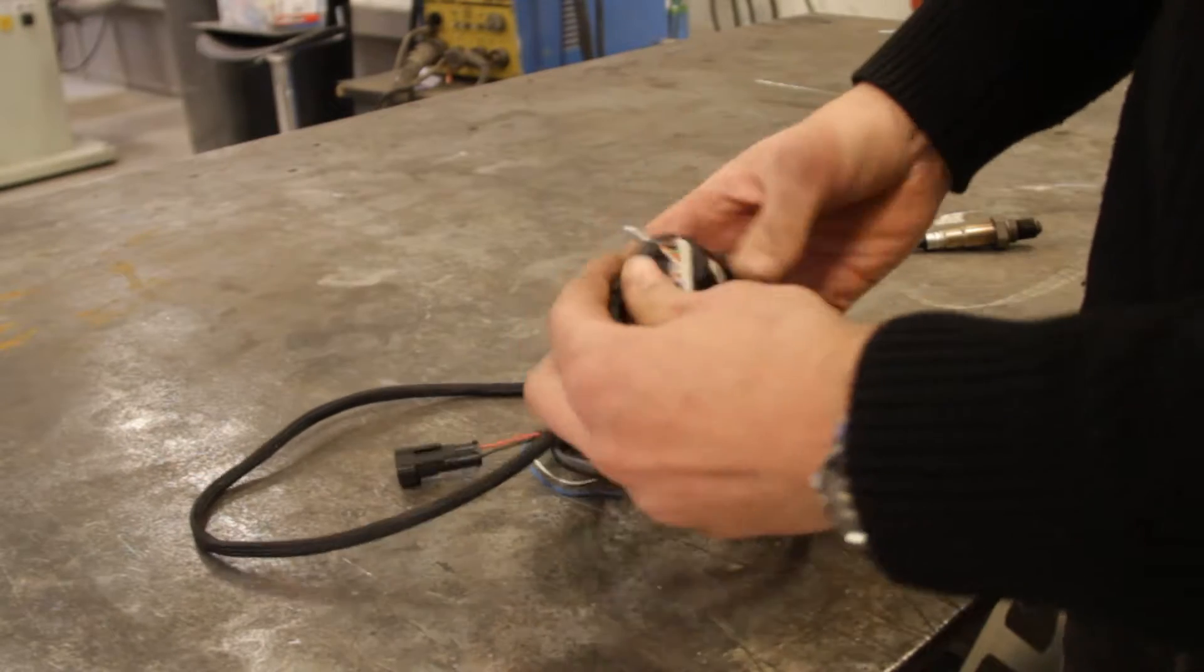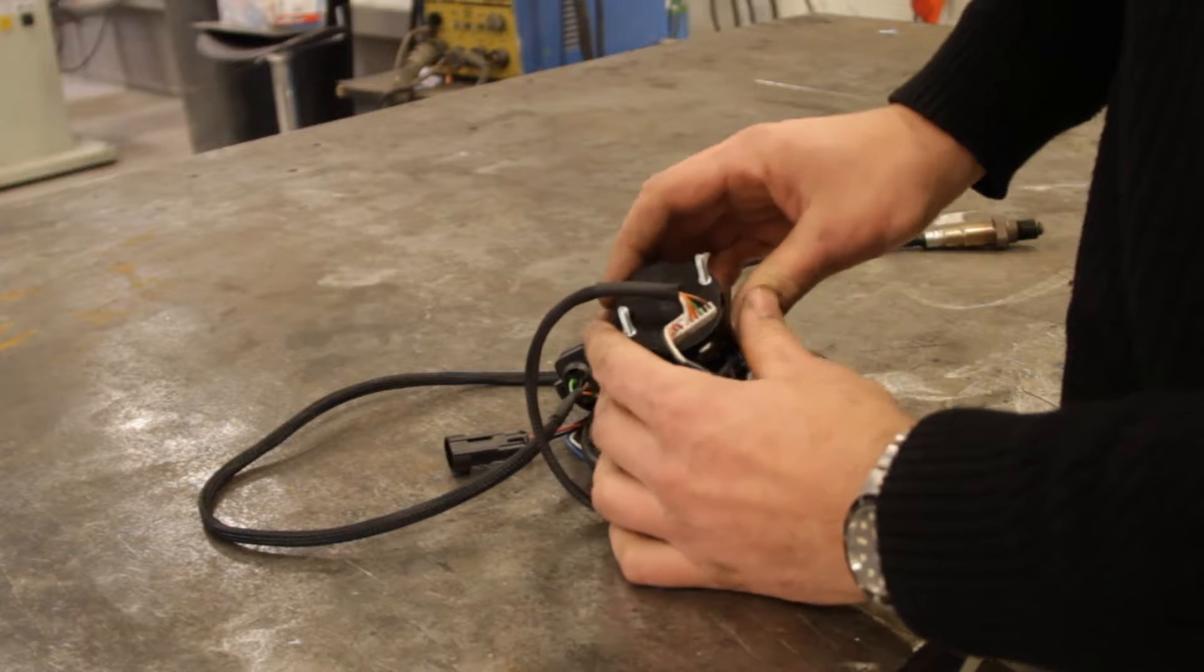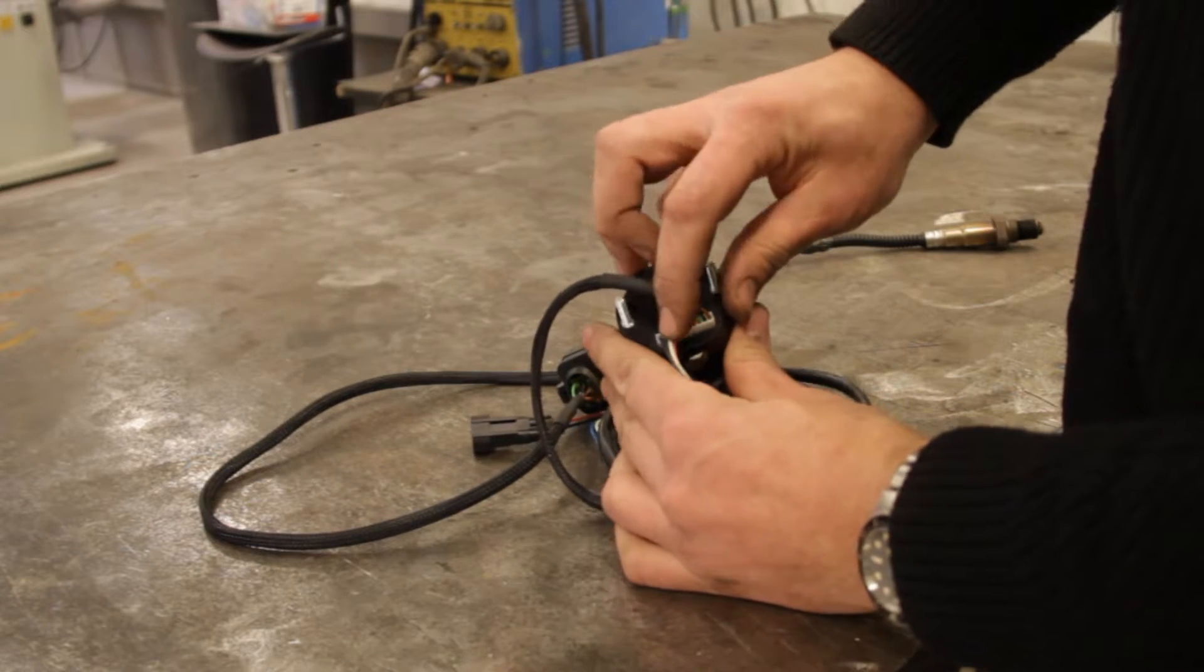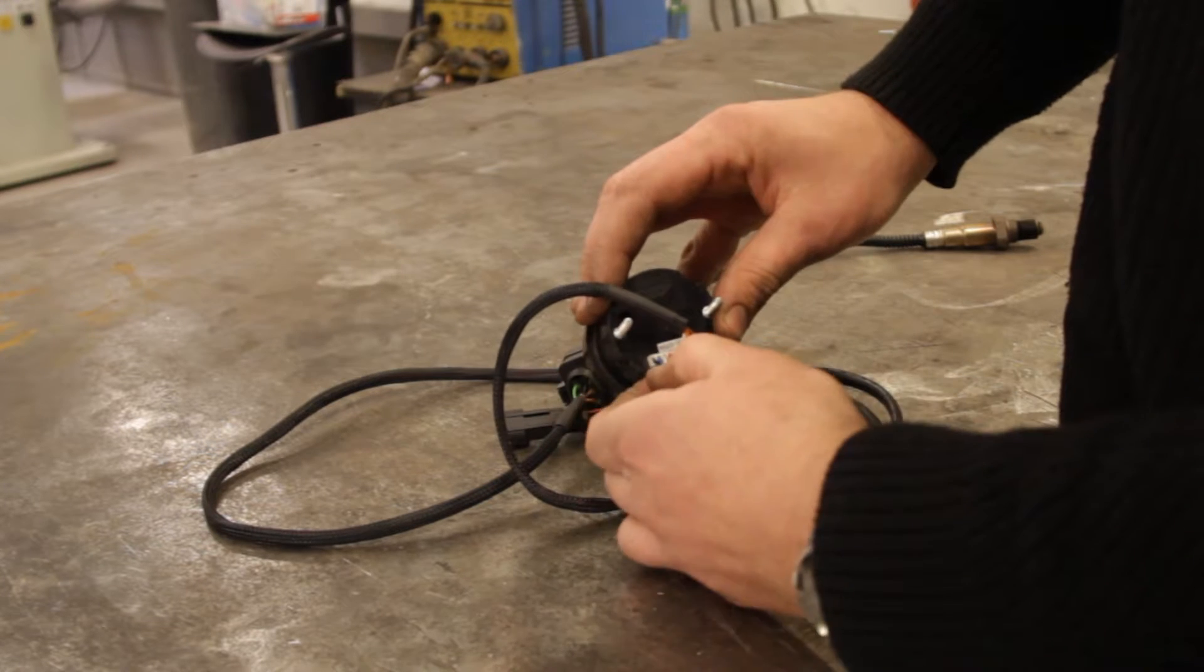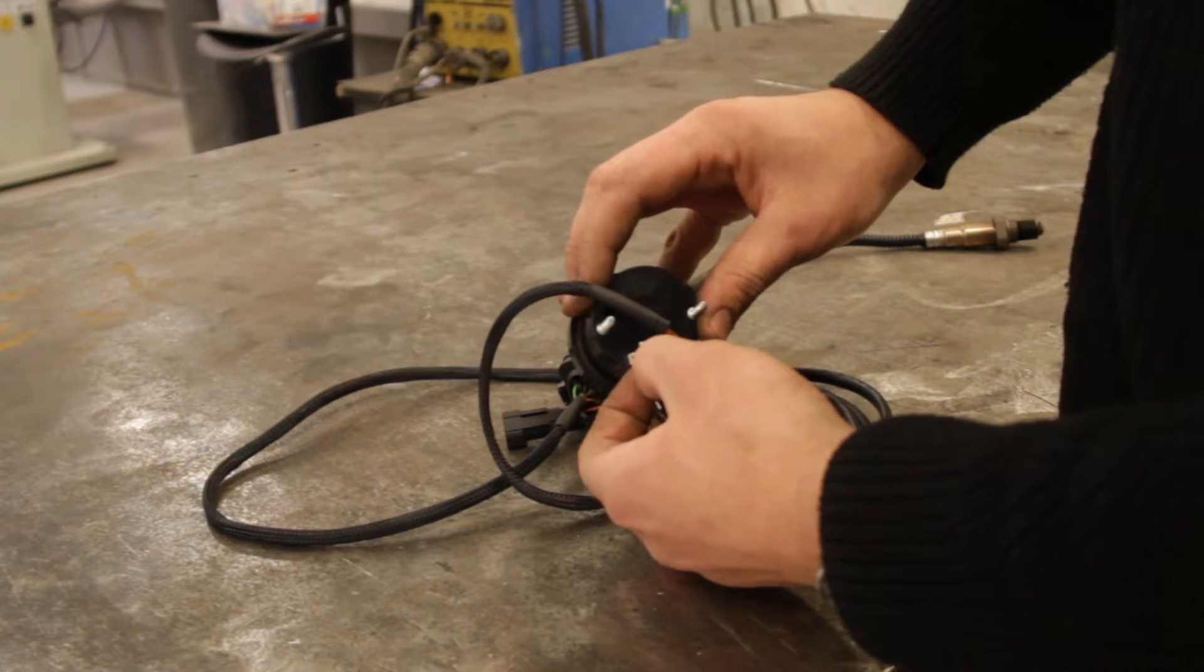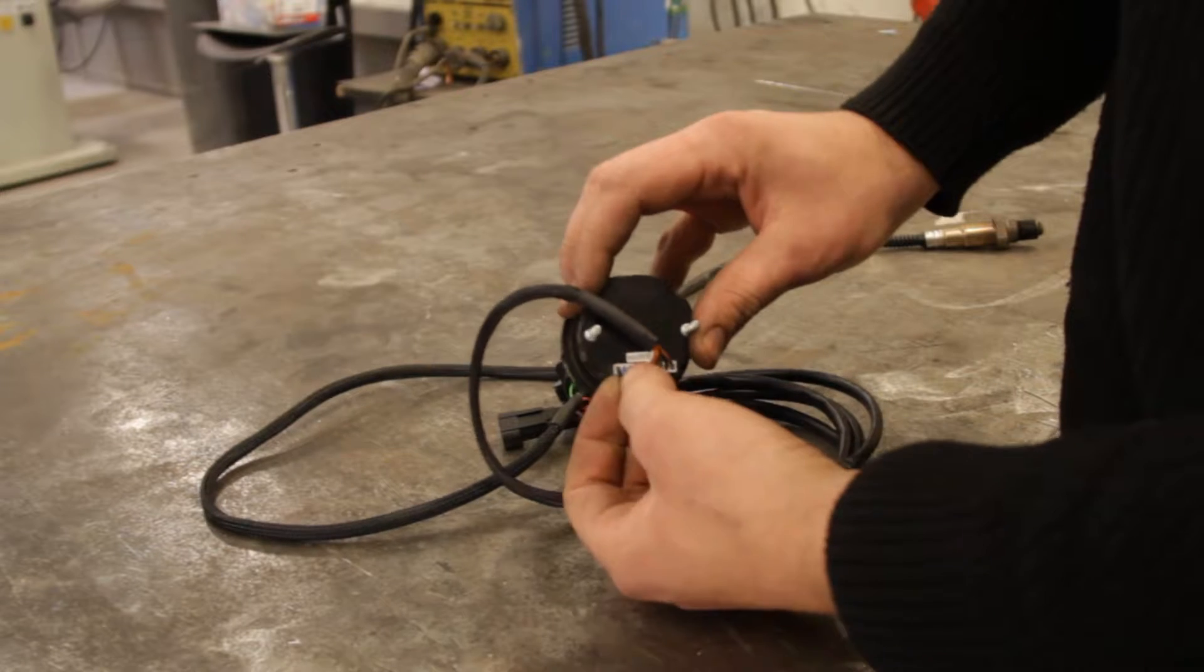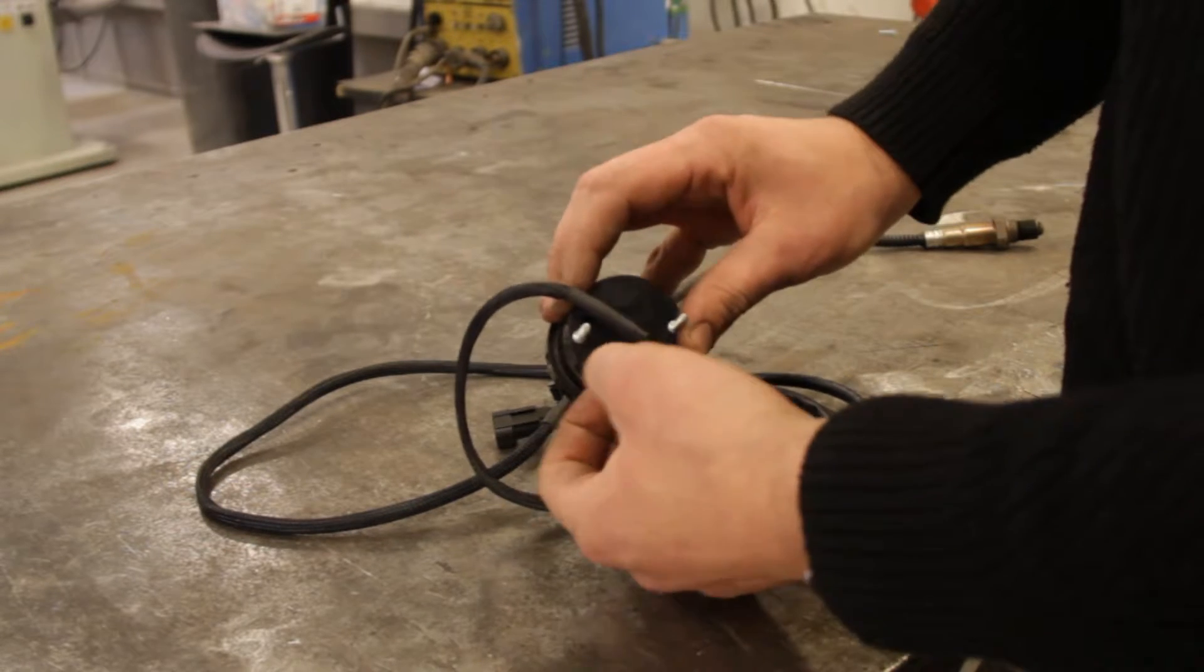What I will do is go through it. Basically on this plug here, they have this four pin connector already, which is obviously your power and your ground, plus your analog five volt output, plus your one to two volt output which you can use as a narrowband.